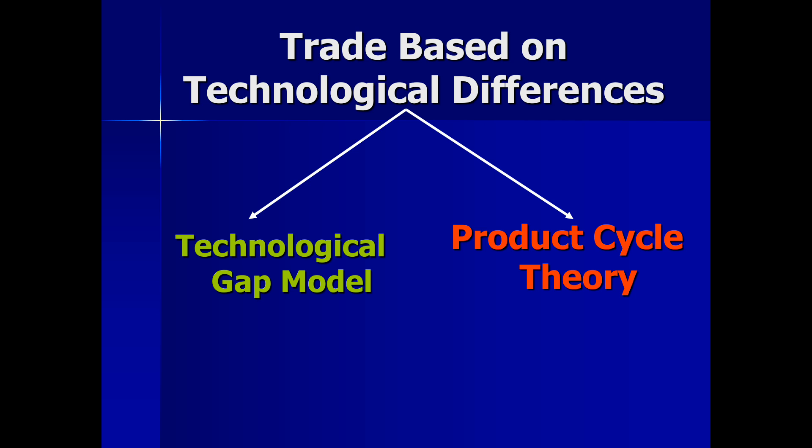From here, we are moving towards another aspect in which we are again trying to relax one of the assumptions of the Heckscher-Ohlin model. The H-O model assumes that the same technology is available in every country, or that countries are endowed with the same level of technology. We know that this is an unrealistic assumption, and we are going to see two theories based on technological differences.